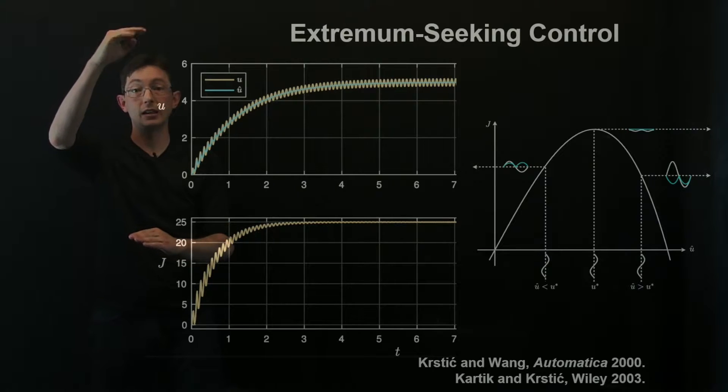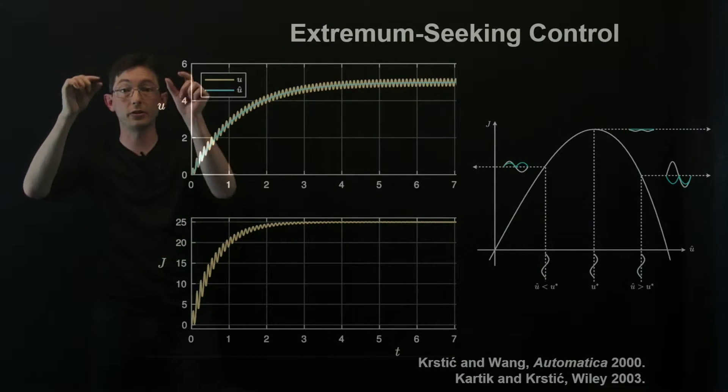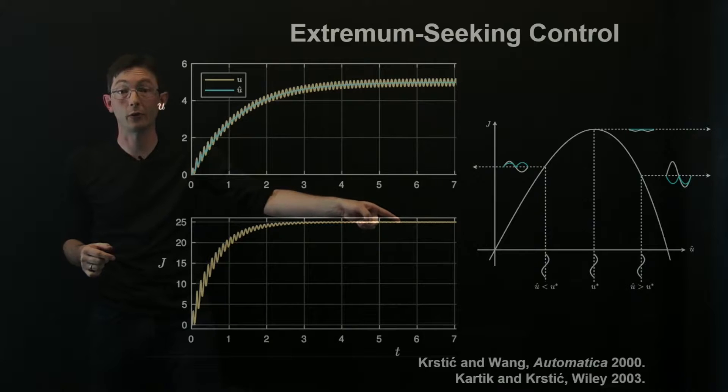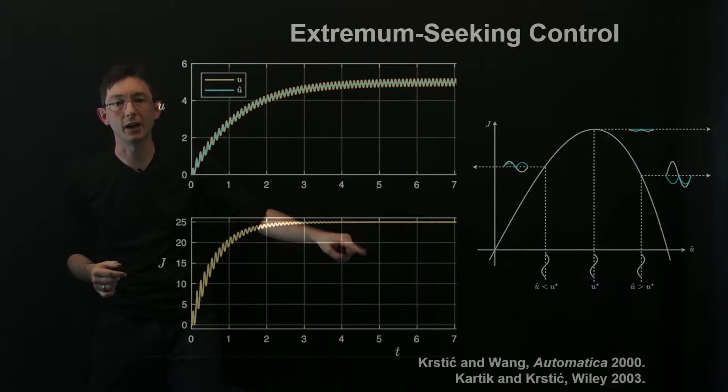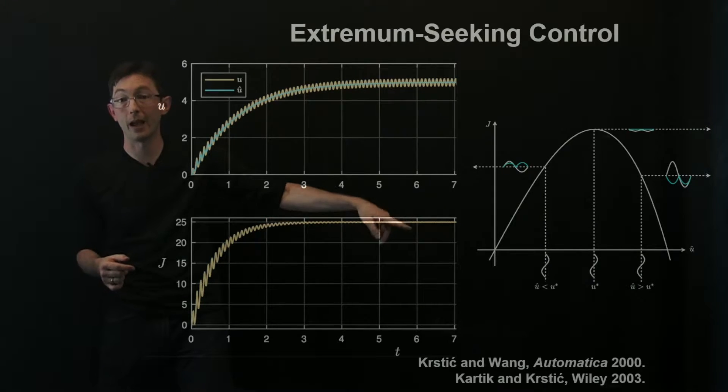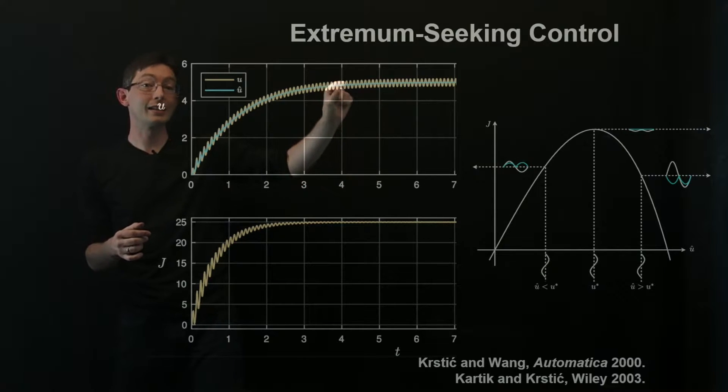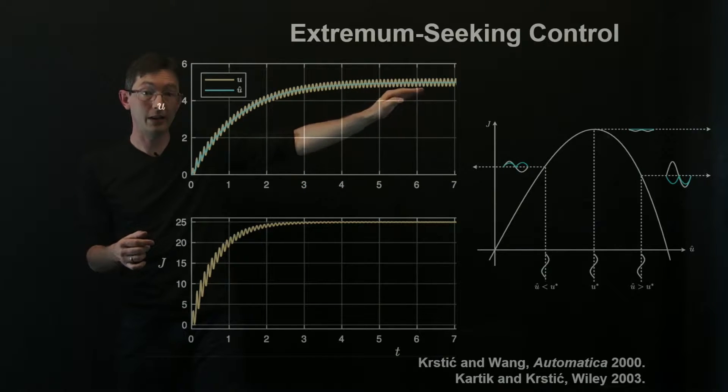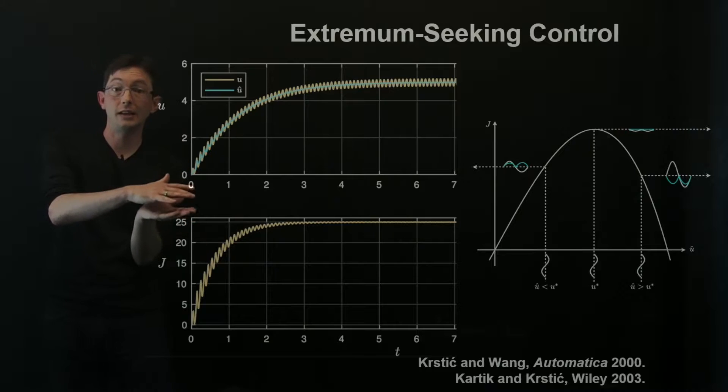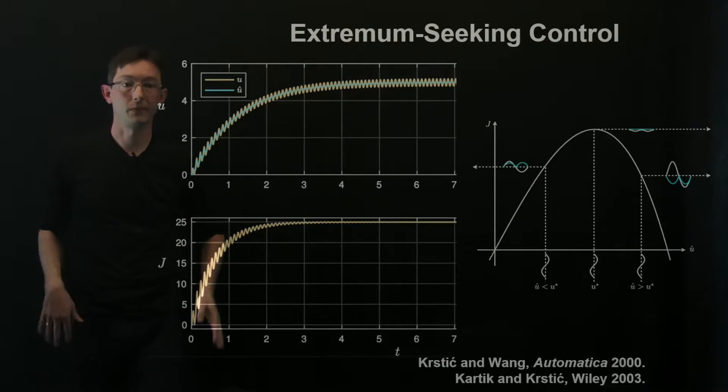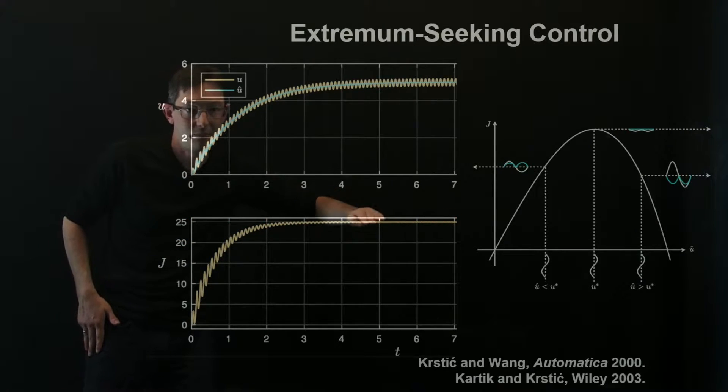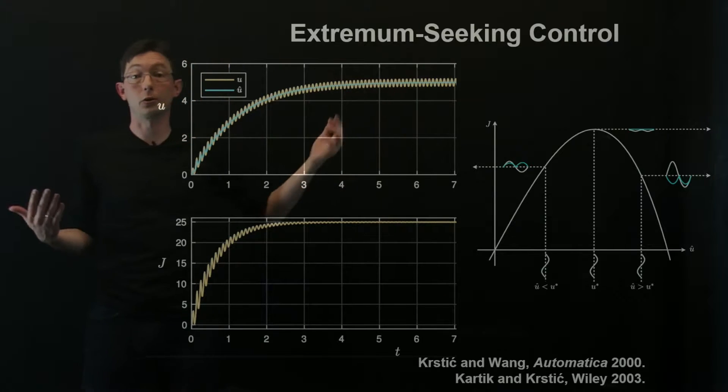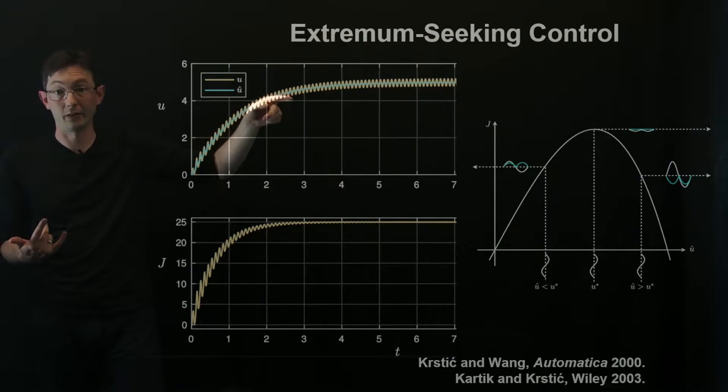So if this is a small perturbation, then essentially what happens is as you approach the peak, your sinusoidal input doesn't give you much loss in performance because you wouldn't want this j to be oscillating a bunch around the optimal value. So it's nice that as you approach the optimum value, these perturbations in j decrease. You get this rock solid peak performance in a very short amount of time with this sinusoidal oscillation.